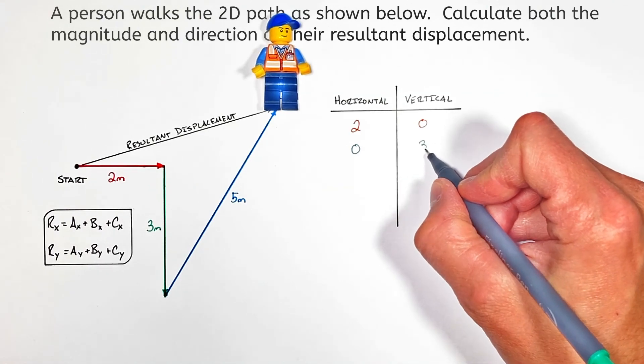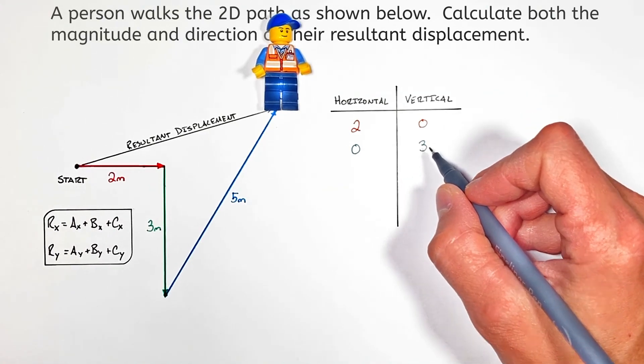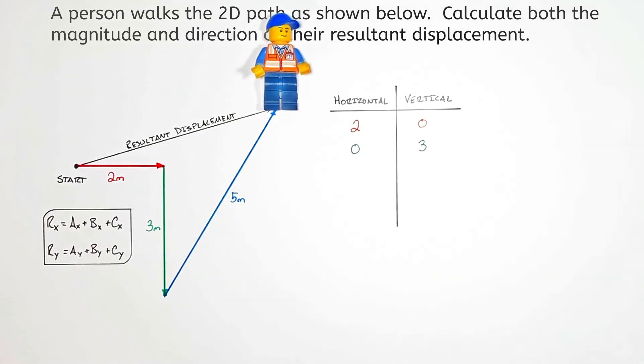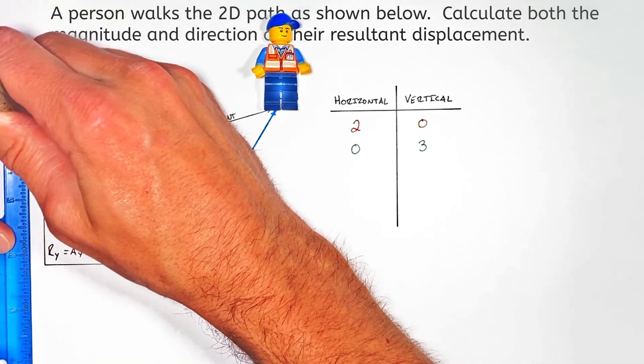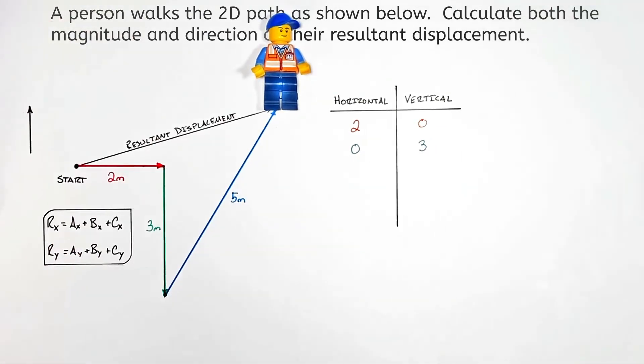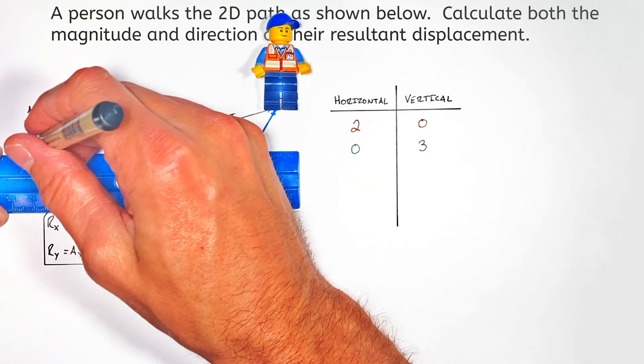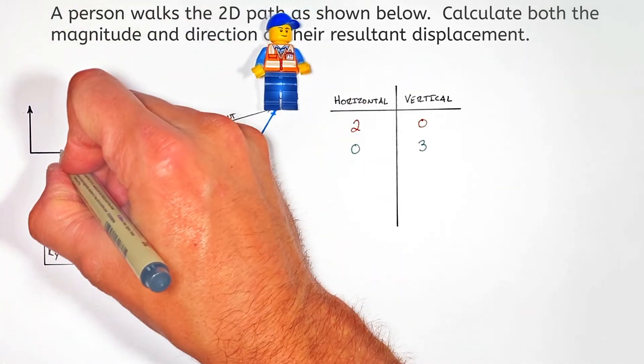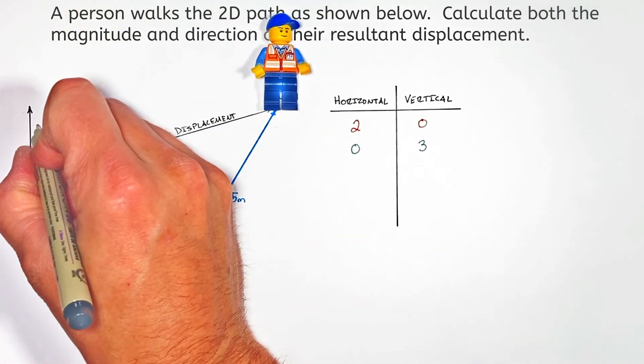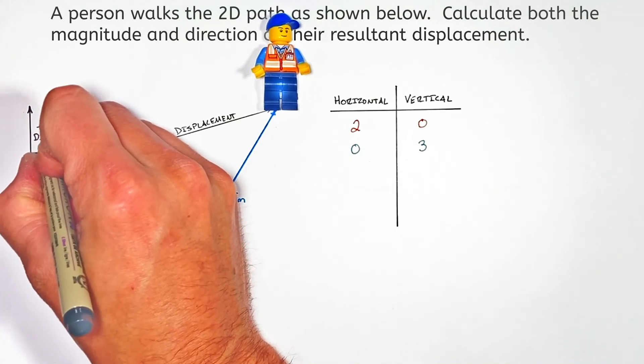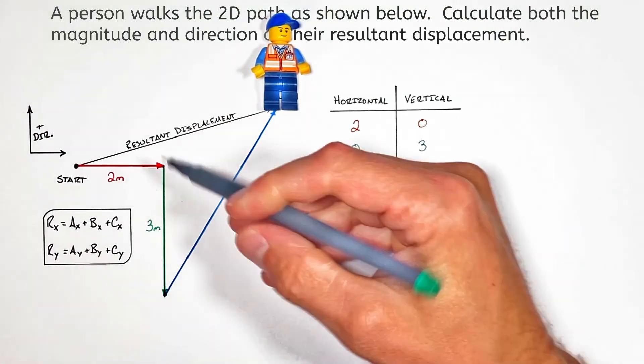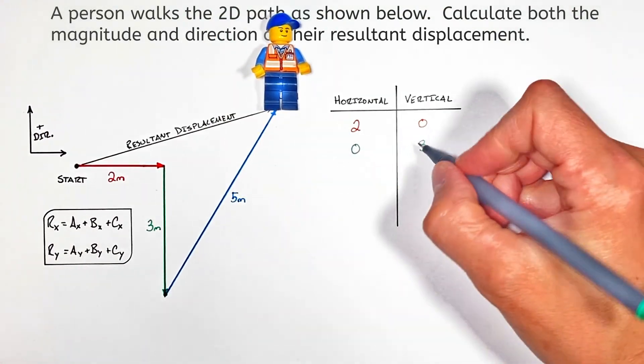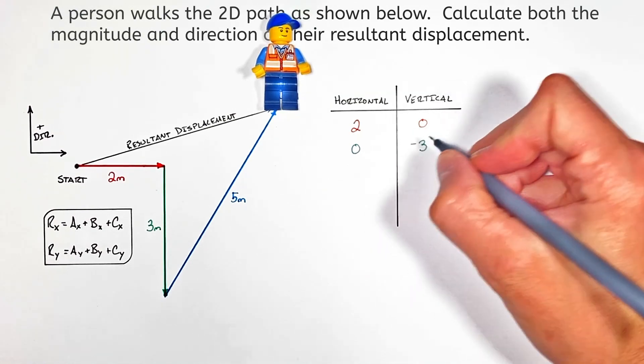Vertically it has a value of three, but we have to be a bit careful here. To go back to one-dimensional motion, vectors had a positive and negative direction, and when we're talking about vectors in 2D or 3D that's no different—the difference being now that we have two positive directions. This three meter vector which is downward is actually in the negative direction.